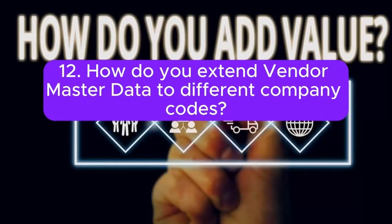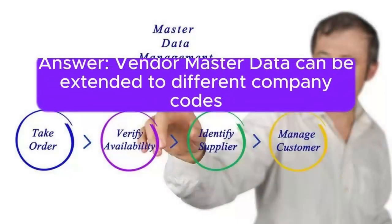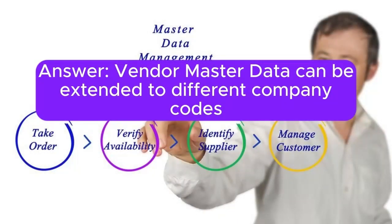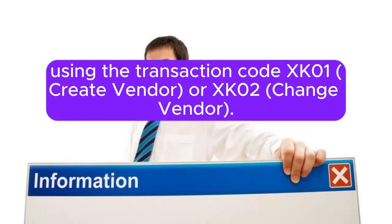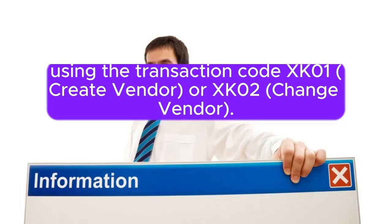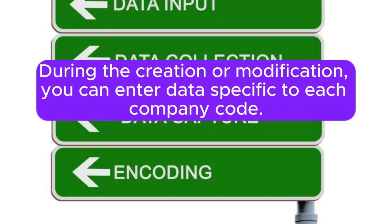12. How do you extend Vendor Master Data to different company codes? Answer: Vendor Master Data can be extended to different company codes using the transaction code XK01 (Create Vendor) or XK02 (Change Vendor). During the creation or modification, you can enter data specific to each company code.